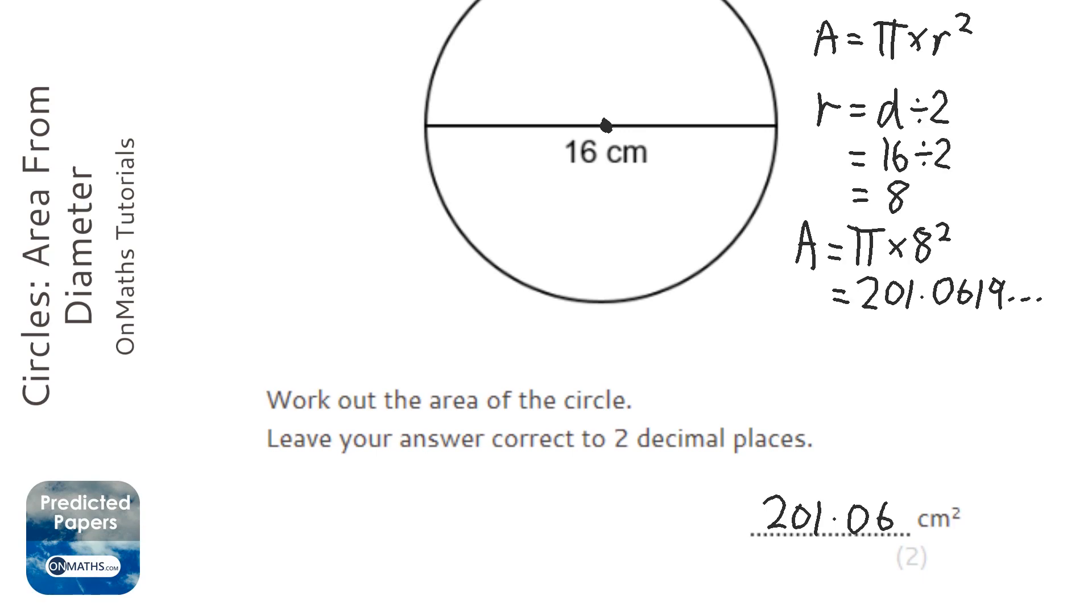Now a common mistake with this is to put in pi times 16 squared and then halve the answer. That won't give you the same answer. You need to put in the radius into pi r squared. So you always need to halve the diameter.